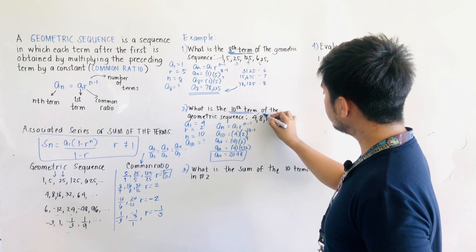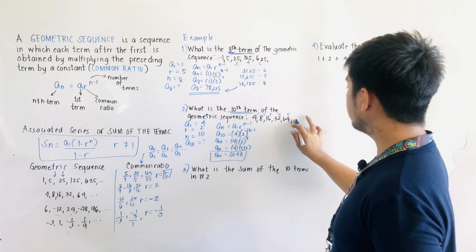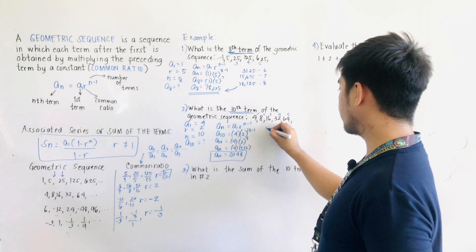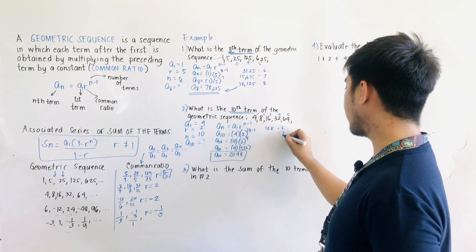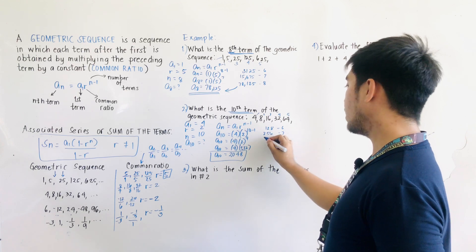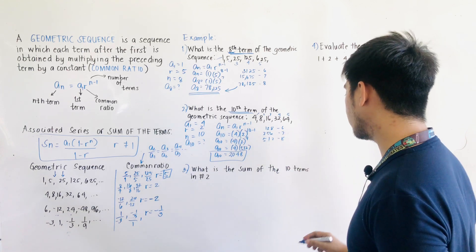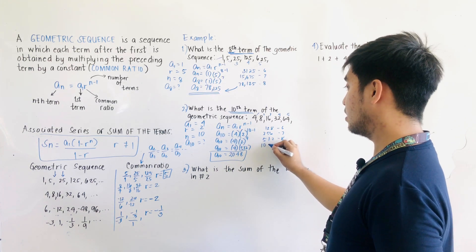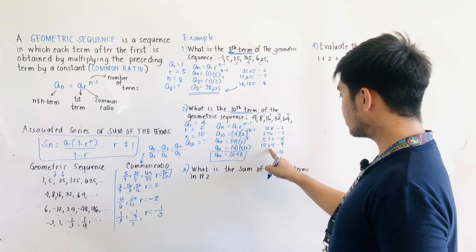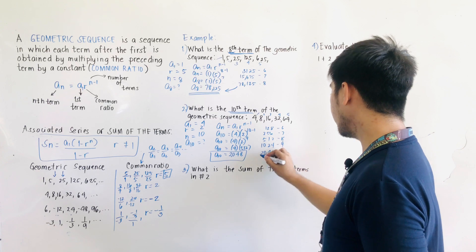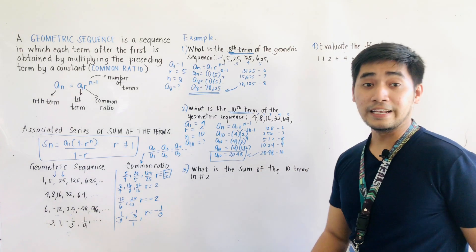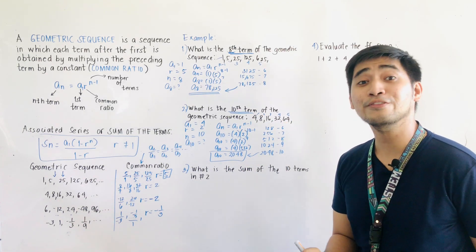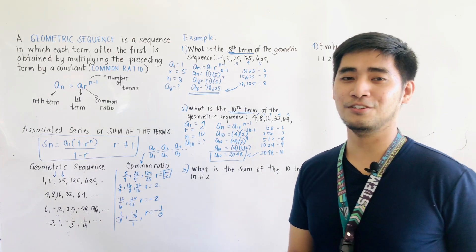Let us verify. Starting from the 5th term (64): 6th term is 64 times 2 equals 128; 7th term is 128 times 2 equals 256; 8th term is 256 times 2 equals 512; 9th term is 512 times 2 equals 1,024; 10th term is 1,024 times 2 equals 2,048 — matching A10. The formula is the shorter method.